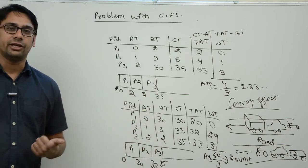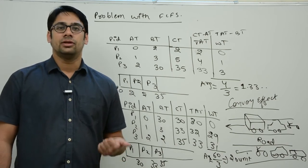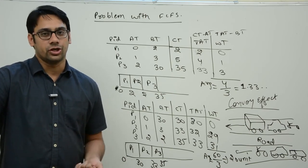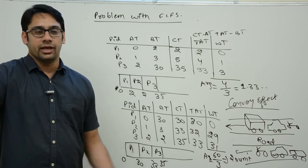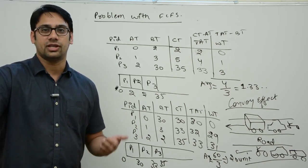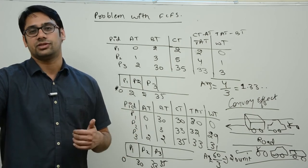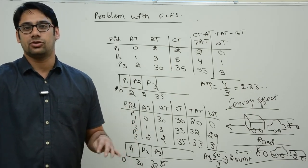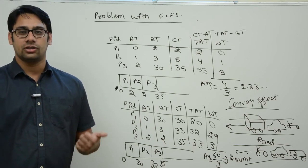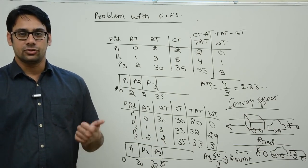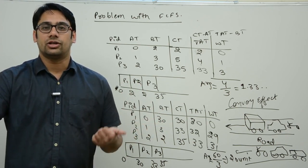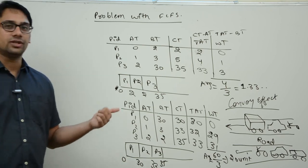In the context of FCFS scheduling, this is called the convoy effect: processes with a very high burst time cause processes with lower burst time to wait for a long duration, increasing their waiting time and reducing system throughput. The solution is to execute processes with lower burst time before those with higher burst time — that is, execute shorter jobs first. This introduces our new algorithm, which improves upon FCFS, called the Shortest Job First or SJF algorithm.